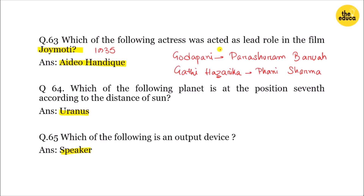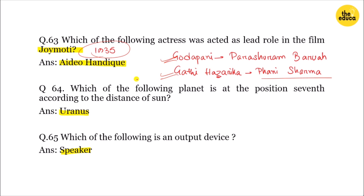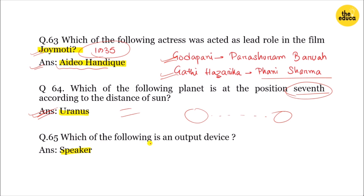Which of the following actresses played the lead role in the film Joy Moti? Joy Moti was made in 1935. The next question asks which of the following is an output device — the answer is the speaker.